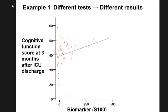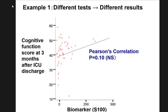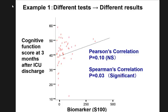So this is actually a scatter plot — each dot is a patient. If you put a straight line through, you can see the trend. When you have two continuous variables — biomarker and cognitive function — you could use Pearson's correlation. When you use Pearson's correlation, the p-value is 0.1, which is significant.